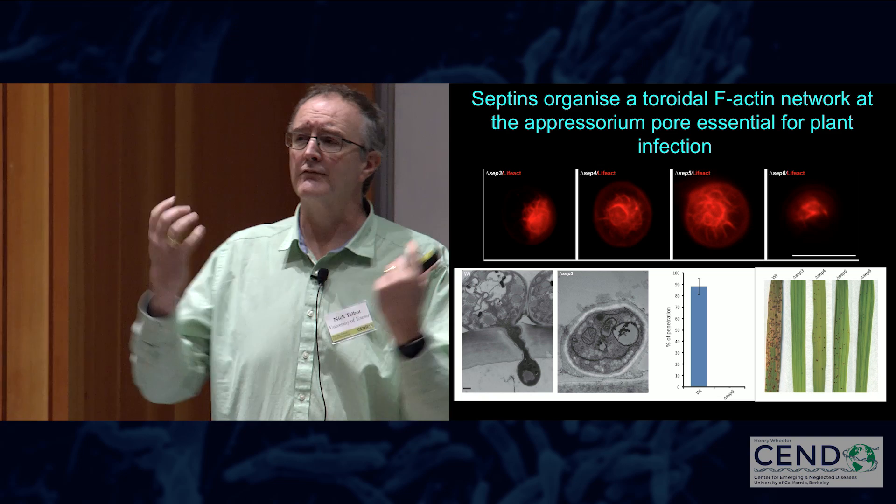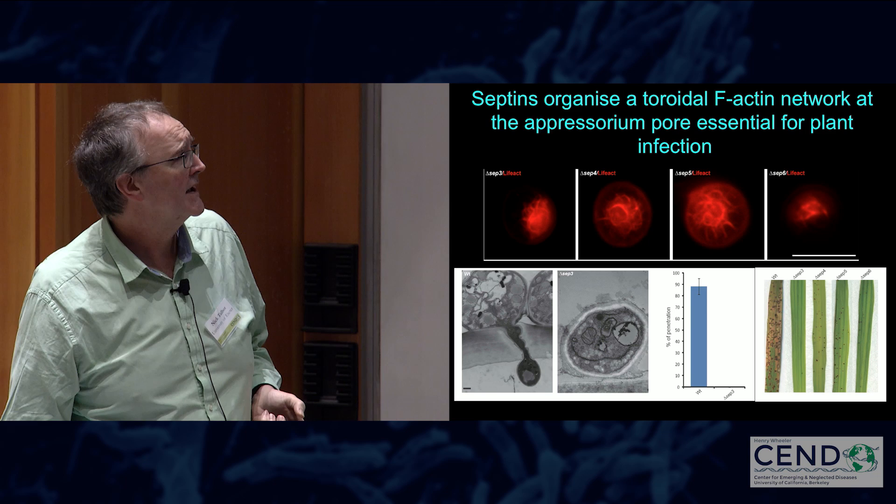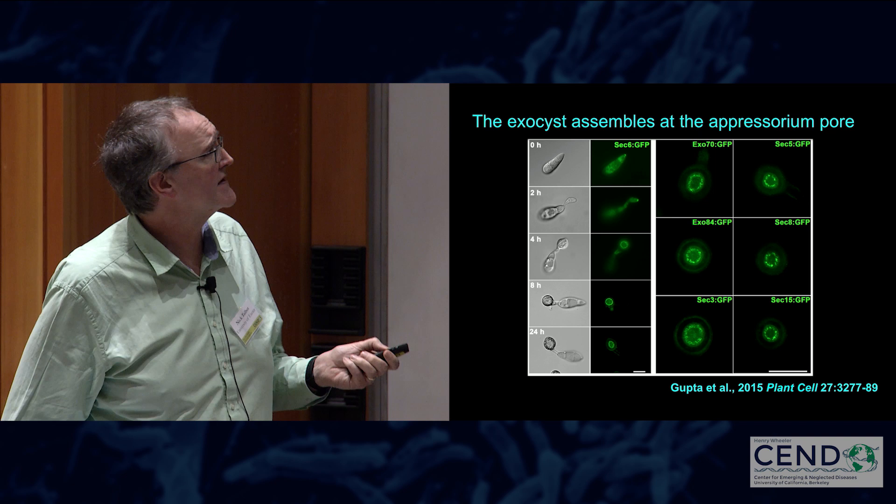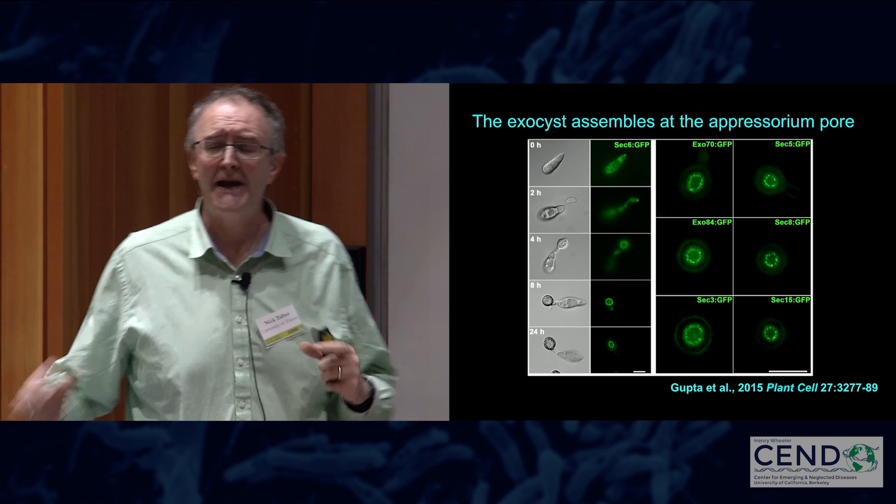The septins are also responsible for organizing other proteins. For instance, the eight-membered exocyst complex, which is required for polarized exocytosis, is also found in a ring formation at the base of the appressorium in a septin-dependent manner — organized in a way which is dependent on the activity of the septins.